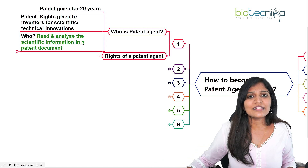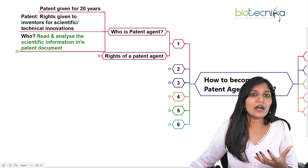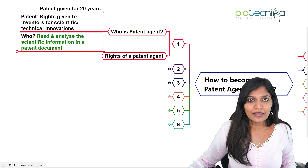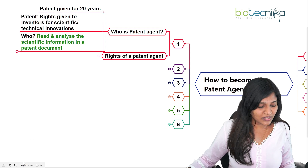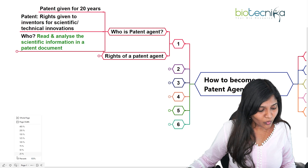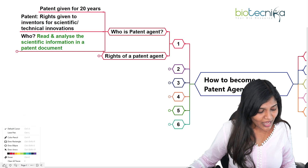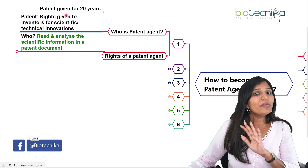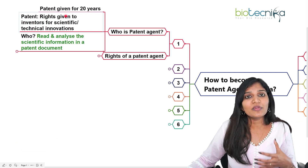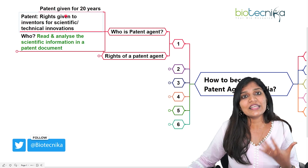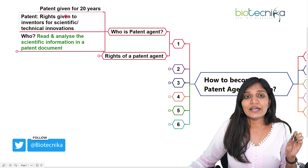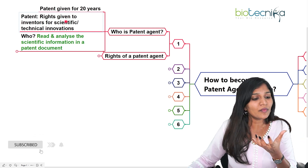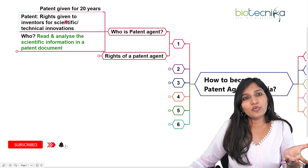If someone has found something truly creative and meaningful to the scientific community, or there is some sort of technological innovation, it is a right given to the inventor or discoverer. They can use this for almost 20 years, and nobody else can use the equipment, instrument, or protocols they found without the inventor's permission.